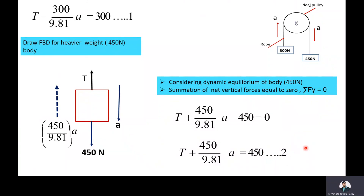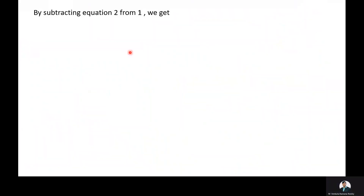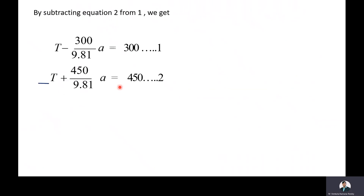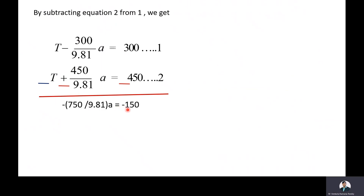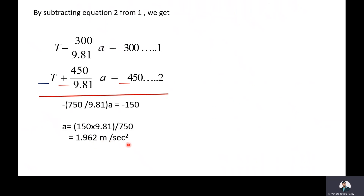Now we subtract equation 2 from equation 1. By subtracting, we get −(750/9.81)·A = −150. Solving, A = 1.962 m/s². That is, the acceleration with which the heavier body comes down is equal to 1.962 m/s².